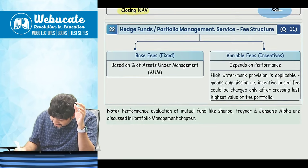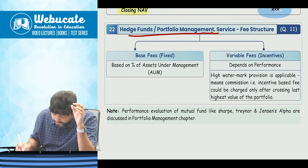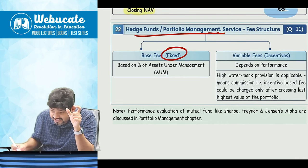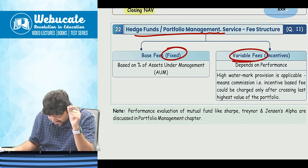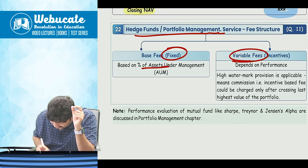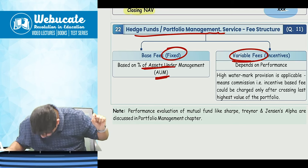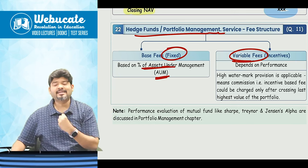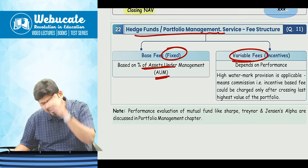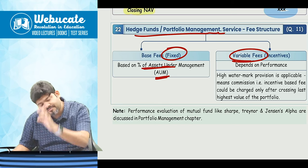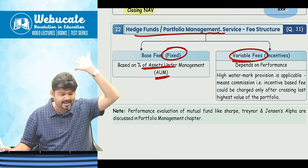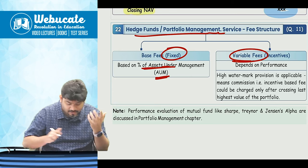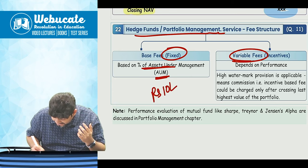The last concept in this chapter is hedge fund portfolio management service fees. This consists of two parts: one fixed part and one variable part, both based on percentage of assets under management. For example, if you give ₹10 crore, I will take 1% as a fixed fee irrespective of performance — that is ₹10 lakh as fixed fees.